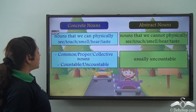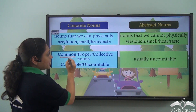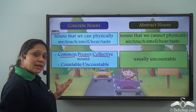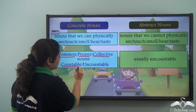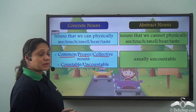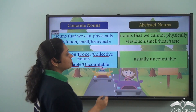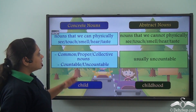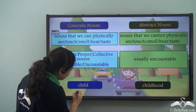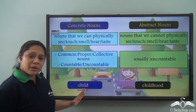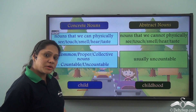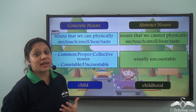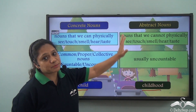Concrete nouns can either be common nouns, proper nouns, or collective nouns, and they can be either countable or uncountable. Abstract nouns are usually uncountable. For example, when we say 'child', it is a common noun as well as a concrete noun. But 'childhood' is the name of a state, so it is an abstract noun.